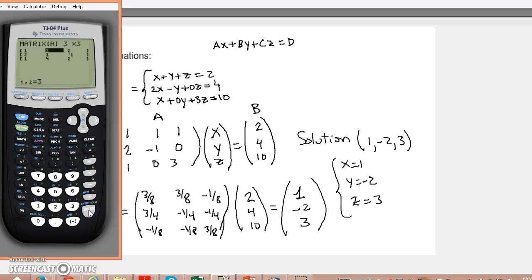1, and then 1, and 1. And then I have 2, then negative 1, and then 0. And then I have 1, 0, 3.